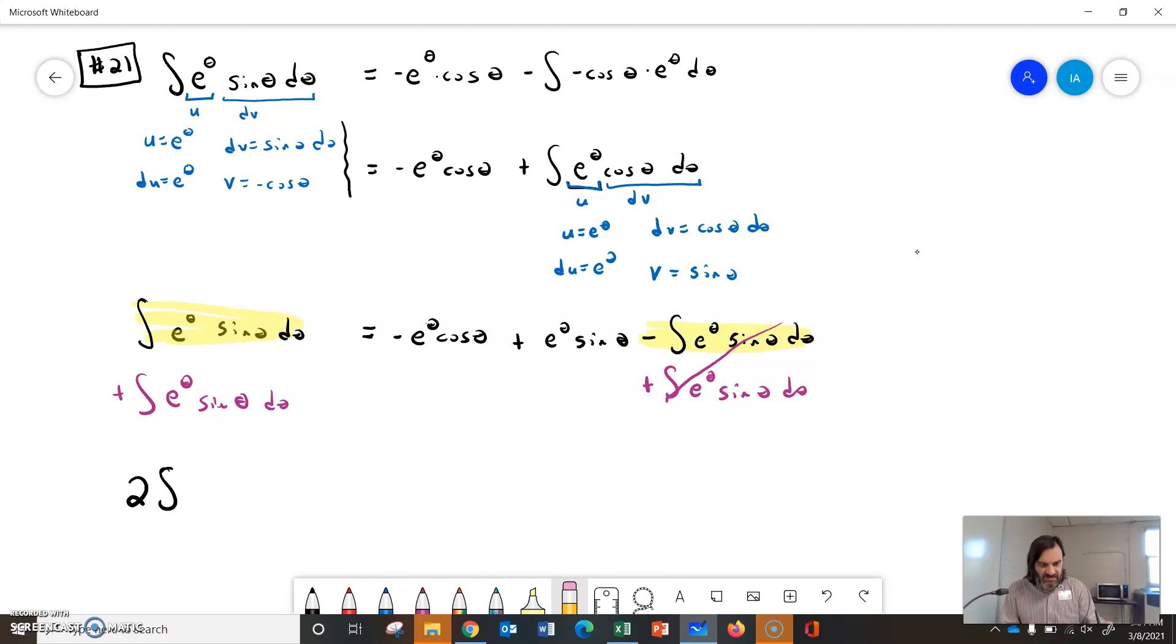But it'll be two of the integral of e to the theta sine theta d theta. And that'll be equal to the other side where we have negative e to the theta cosine theta plus e to the theta sine theta. And I never put it out here because I was waiting until I was done to put all of it together, but there's a plus c.